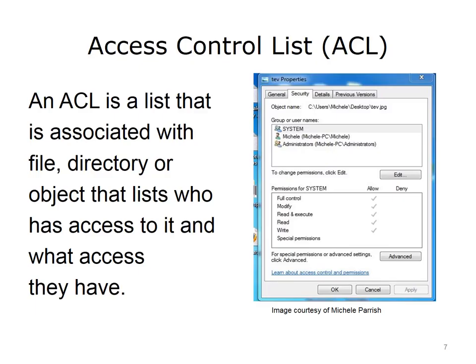An access control list, ACL, is a list associated with a file, directory, or object that lists who has access to it and the type of access. ACLs are created by the owner of the object. On the slide, you can see the ACL for the file named tev.jpeg. There are three objects that have access to the file: system, Michelle, and administrators. System and administrators are group accounts, while Michelle is a user account. All users that are part of a group will inherit the permissions given to that group. Access control is easier to administer through groups than individual user accounts.